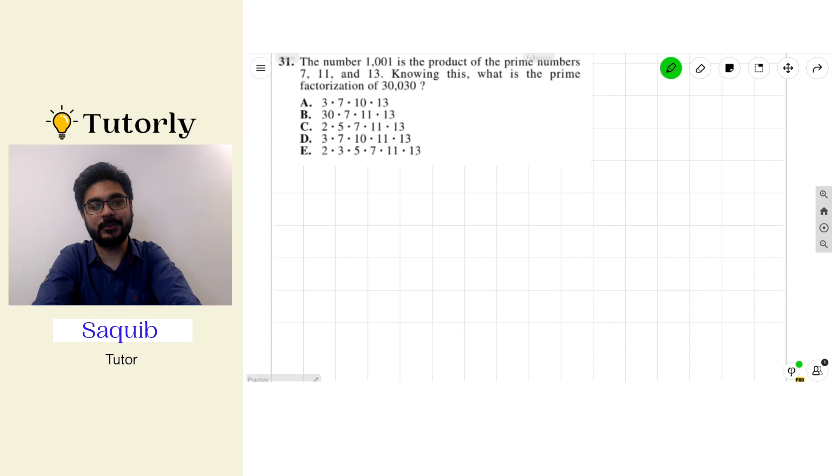Hi there! Let's go ahead and start solving a problem together. In this question, we have the number 1001 is the product of the prime numbers 7, 11, and 13. Knowing this, what is the prime factorization of 30,030?